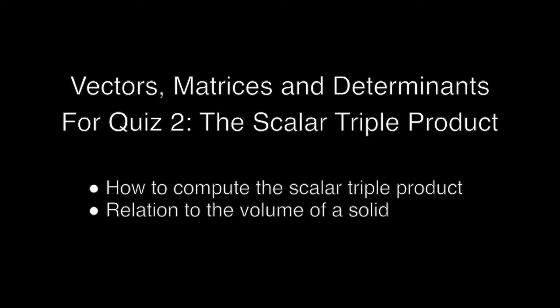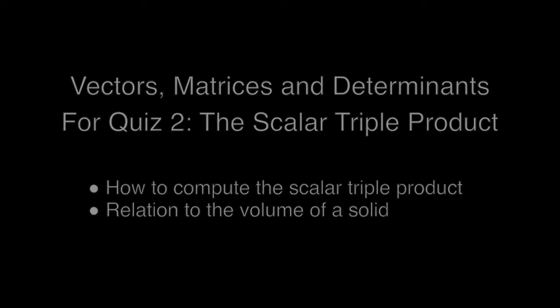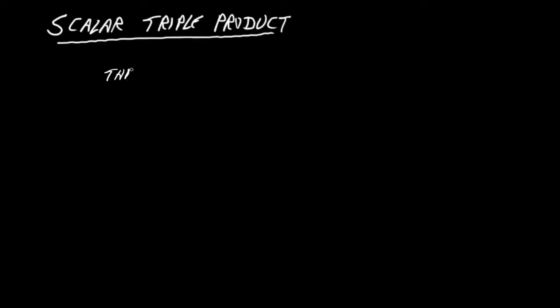Okay, in this lecture we're going to be looking at something called the Scalar Triple Product. So what we're dealing with here is taking three vectors and combining them in a certain way in order to yield a single scalar quantity. So three vectors into one scalar, Scalar Triple Product.